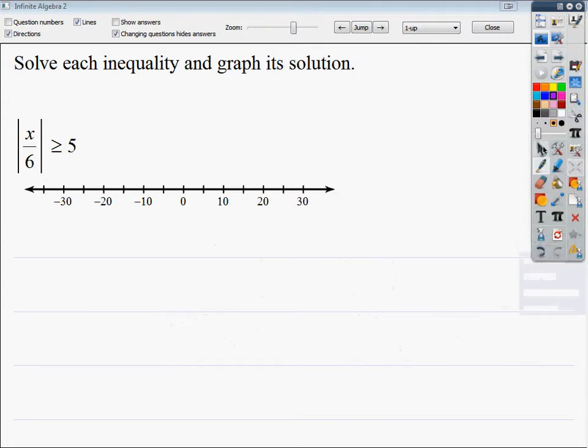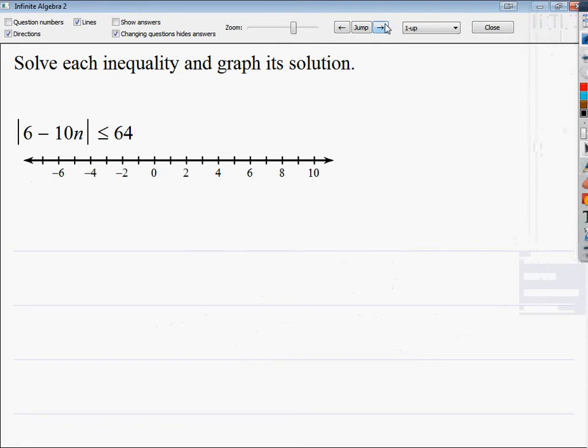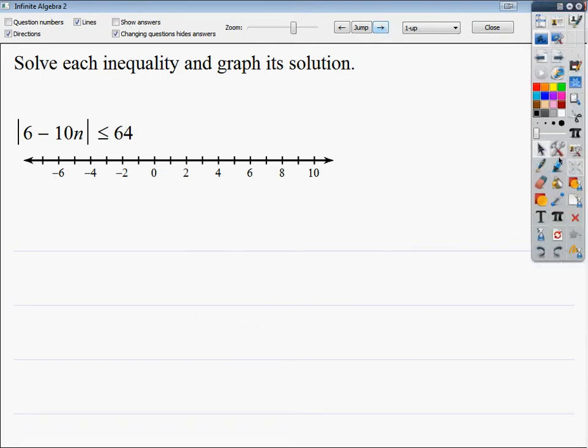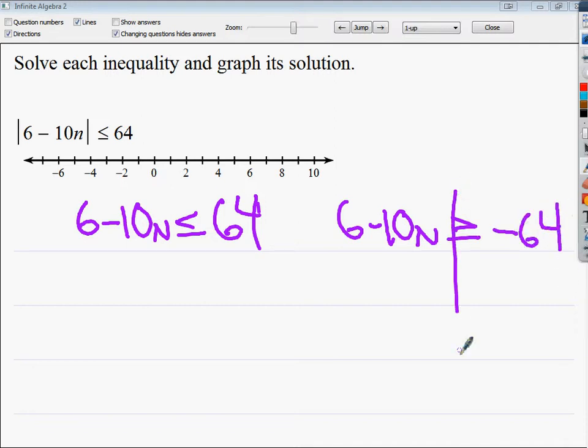That's one step. So I'm going to probably solve one more, and from there, I'm just going to set them up. So this one I do want to solve, because it makes an important point. So I set this one up, 6 - 10n is less than or equal to 64, then I do the other one, which is keep the absolute part, flip the inequality, change the sign. So from here, I need to subtract 6 from both sides. These cancel, bring down negative 10n.